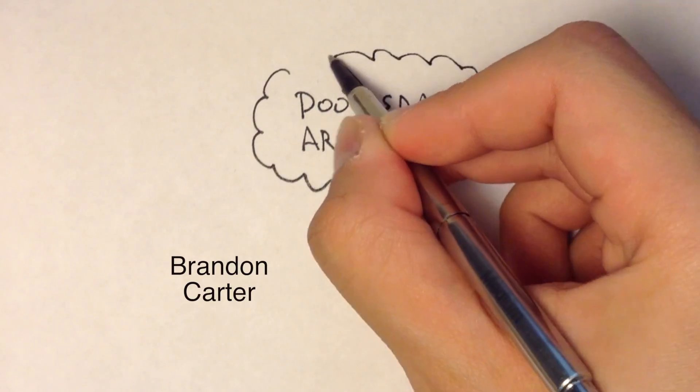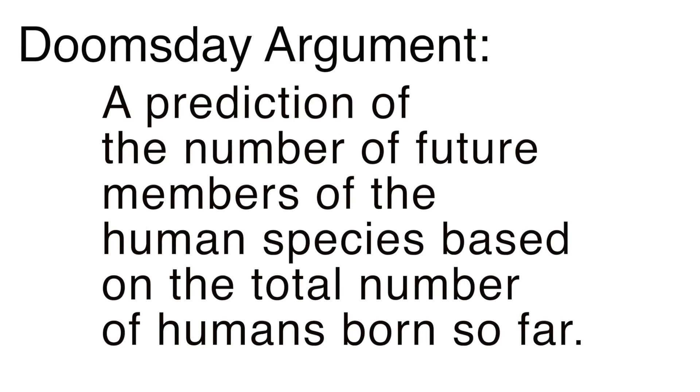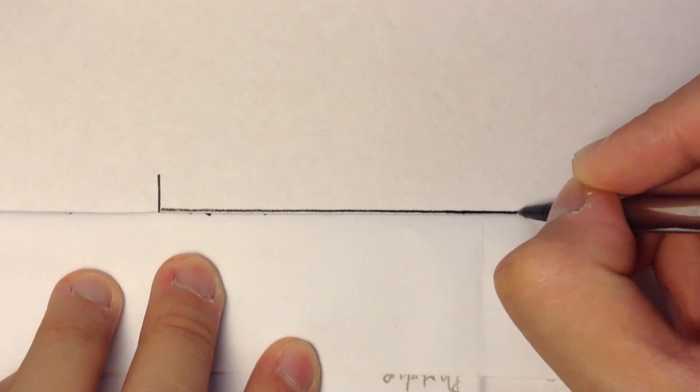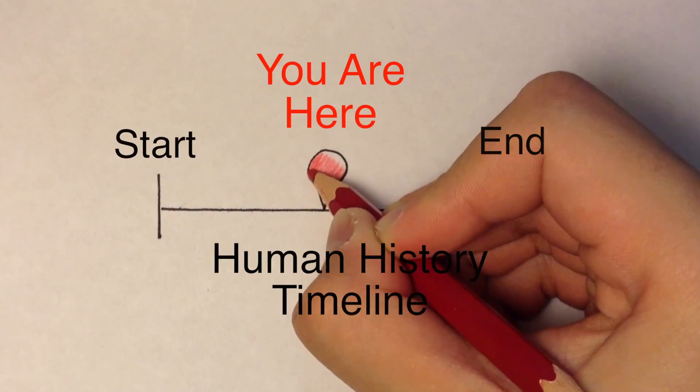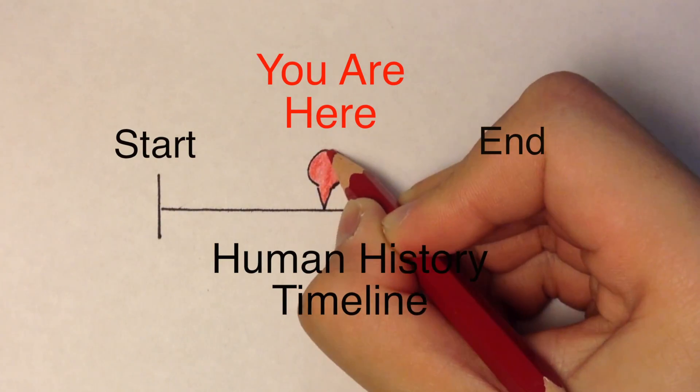First proposed by Brandon Carter, the Doomsday Argument is basically an argument that claims to predict the number of future members of the human species based on the total number of humans born so far. As of today, the argument says that the number of humans alive right now are probably at the halfway point on the entire human history timeline.